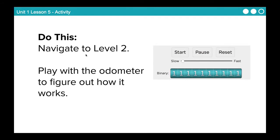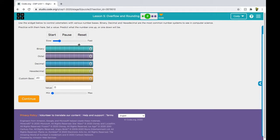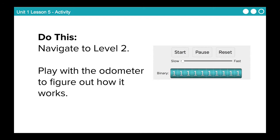So the first thing I want you to do is navigate to level two in lesson five and play with the odometer to figure out how it works. Now, this is what it looks like here. So you should be in lesson five and part two, level two for lesson five. So just play around with this. Take a couple minutes, pause the video here, and play around with it and see what you get.